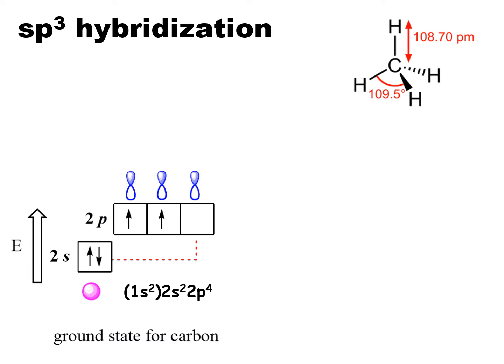Why do we need to introduce hybridization? If you remember the Lewis structure, carbon would have four dots representing the four electrons available to make bonds. However, looking at the electron configuration — which Lewis was totally unaware of — I see only two electrons that are unpaired and available for bonds. So I would think carbon's formula for methane should be CH2, and that's not the case. I need to explain this.